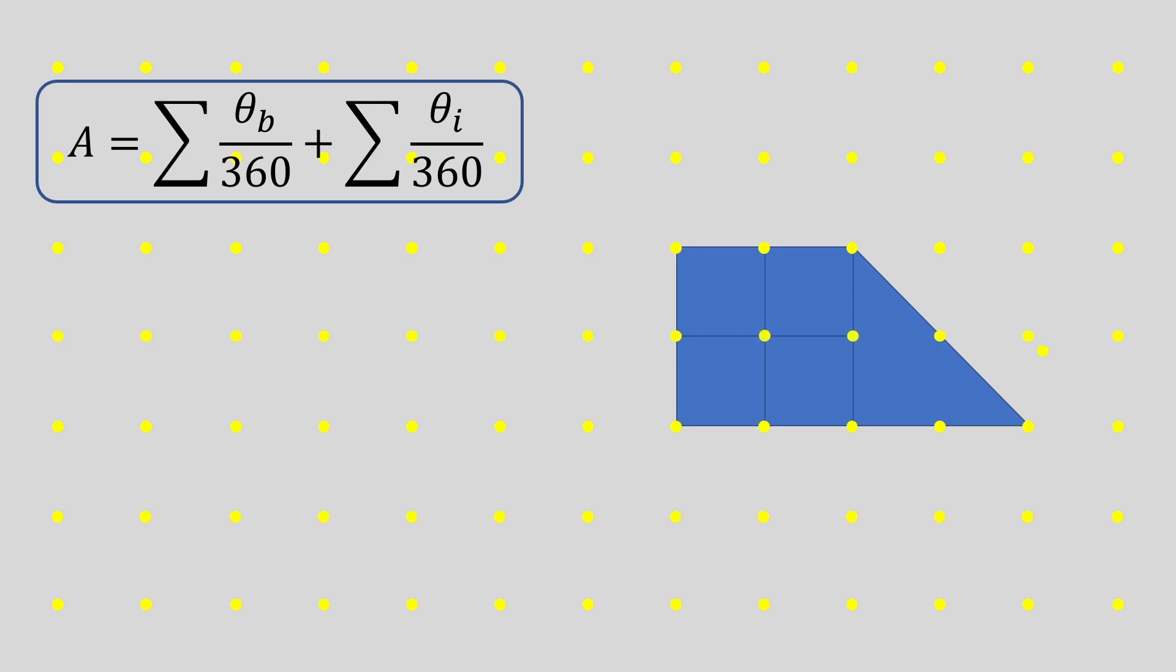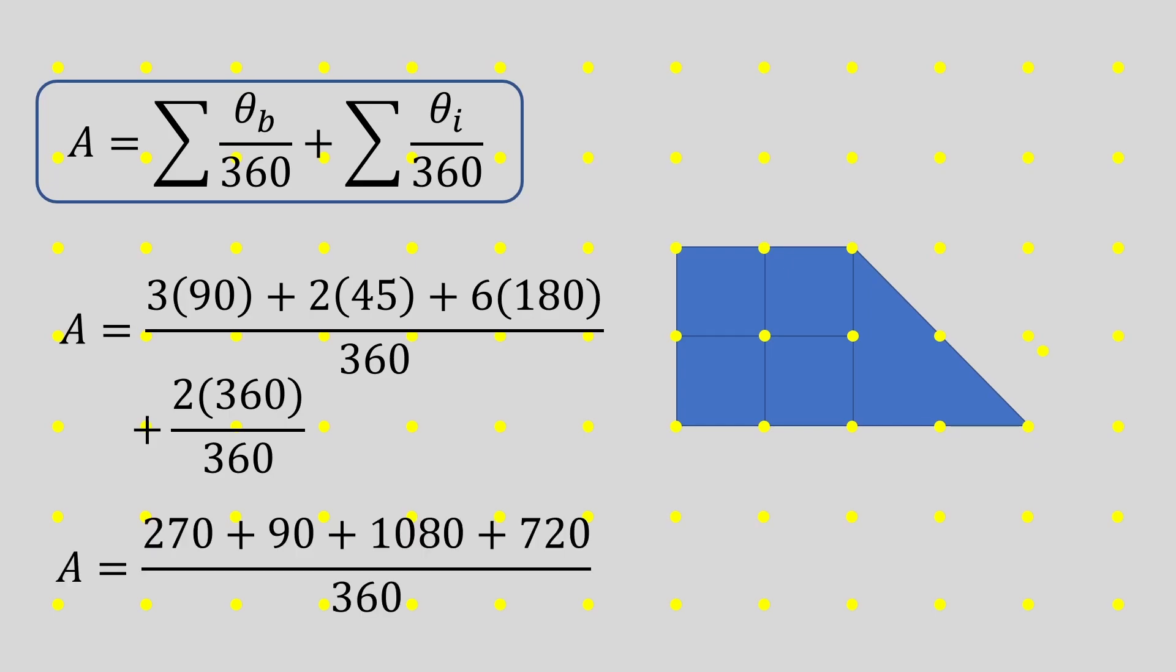Plugging them in, like before, we get the following expression. Which, when simplified, is equal to this. Which gives us a numerator total of 2160. And that, divided by 360, is equal to 6. You can verify that once again, this is exactly equal to our blue shape.